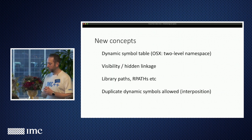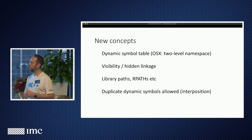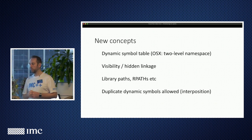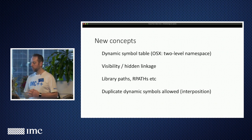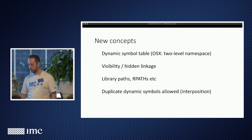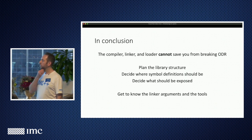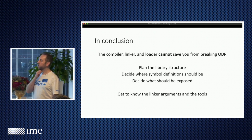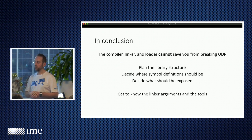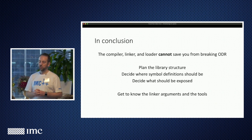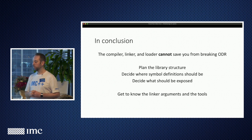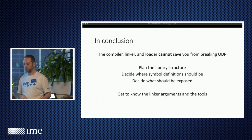Wrapping up. In this tour we ran into a whole bunch of new concepts: the dynamic symbol table, the two-level namespace on OSX, the idea of visibility and hidden linkage, library paths and finding libraries on disk and rpaths, and the idea that you can have duplicate symbols at runtime in your loader — not just allowed, but actually a feature. In conclusion: if you want to avoid breaking ODR, the compiler, the linker, and the loader are not going to save you from this. All you can do is plan your library structure, decide where you're going to put everything, and decide what behavior you actually want. I recommend using hidden visibility and exposing only what you want to expose. And don't be afraid of your linker — get to know it, read the manual and the surrounding tools.